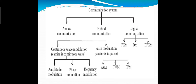Analog communication can be divided into continuous wave modulation and pulse modulation. Continuous wave modulation can be further divided into amplitude modulation, phase modulation, and frequency modulation. Pulse modulation can be divided into three types: pulse amplitude modulation, pulse width modulation, and pulse position modulation.